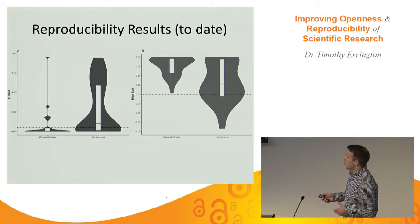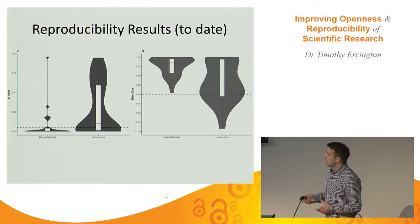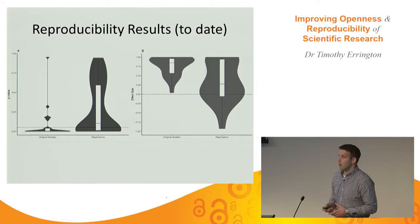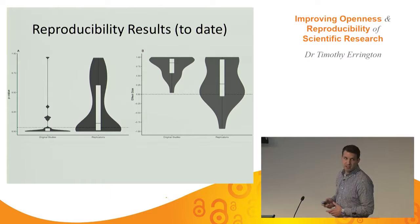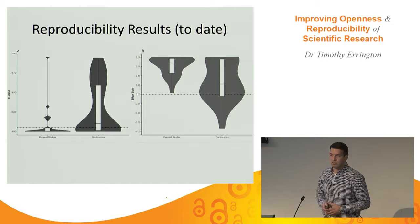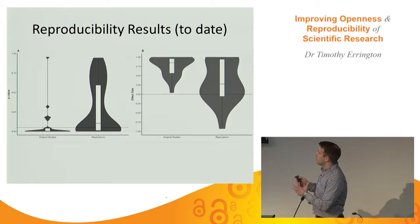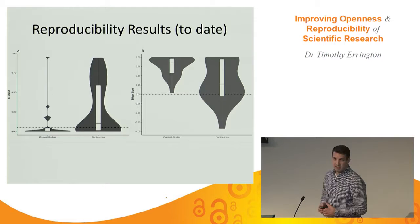Here are two graphs: on the left, p-values; on the right, effect sizes. The left point of each is the original study's result, and the right is what we found in the replication. There's a lot of positive results — the dotted line is 0.05 — but we're seeing a much larger range in the replications. For effect size, the originals always showed positive, large effects, but in the replications we not only see regression to the mean but sometimes effects in the opposite direction. This doesn't mean one is right and one is wrong — it just tells us that differences are occurring and the details are what matter.